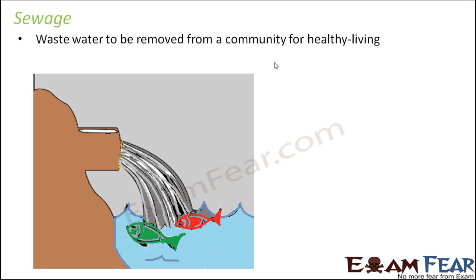Sewage is basically wastewater which needs to be removed from a community for healthy living. Wastewater is a product from each and every house in a society. Sewage is primarily a liquid waste — solid wastes are thrown into dustbins. Sewage is the liquid waste which comes out of sinks or toilets inside the house.